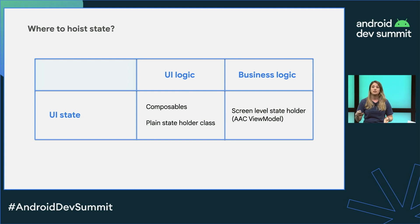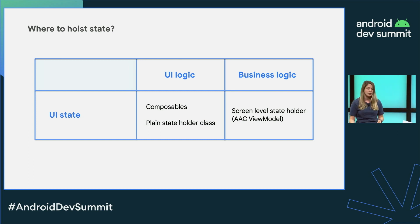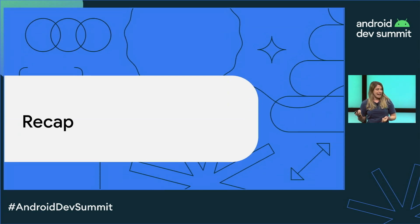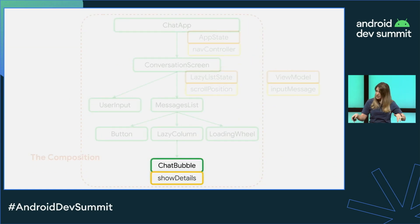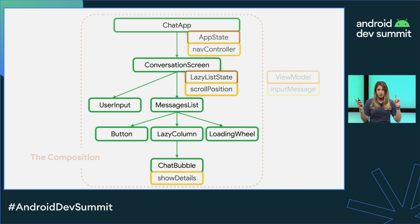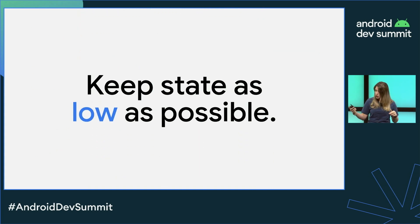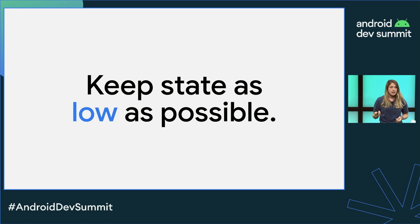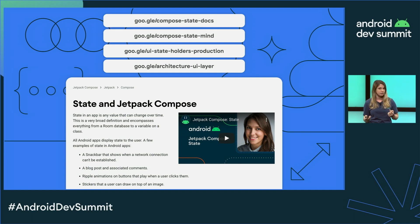So, when you have business logic being applied to UI state or producing UI state, you should hoist that state to your screen level state holder — a view model in our case. As a recap: where you hoist your state is determined by the type of logic that reads or writes that state. We explored several examples, from having composables at the bottom as the source of truth, to hoisting it higher, extracting it to a plain state holder class, or hoisting it to the view model outside of the composition. We recommend keeping state as low as possible, closer to where it is consumed, and exposing immutable state and events to modify the state from the owner for the consumers. Additional resources include the UI state holders and UI production talk, and the architecture documentation.